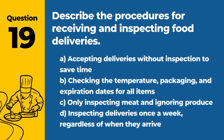Question 19. Describe the procedures for receiving and inspecting food deliveries. The answer is B: Checking the temperature, packaging, and expiration dates for all items. Thorough inspection upon receipt ensures the safety and quality of delivered foods.